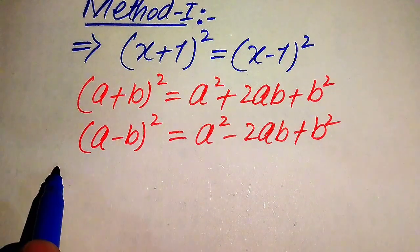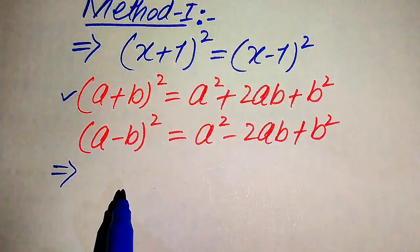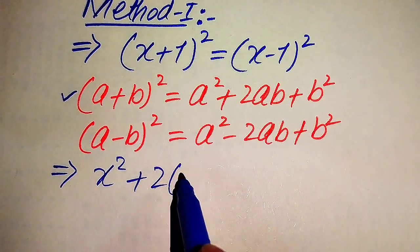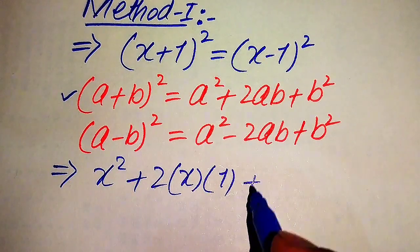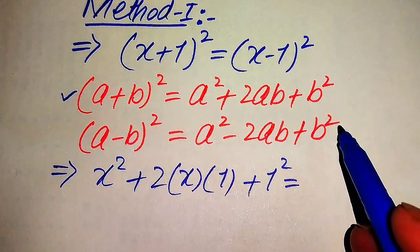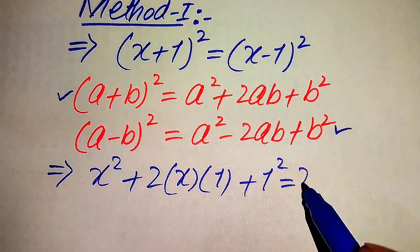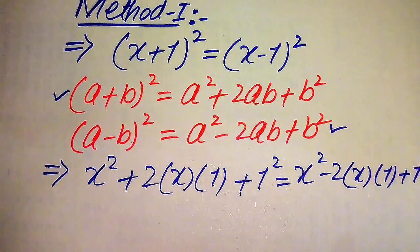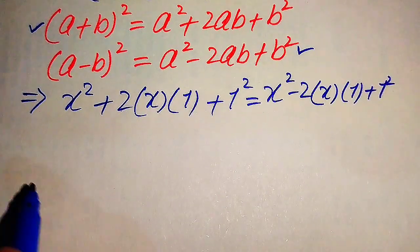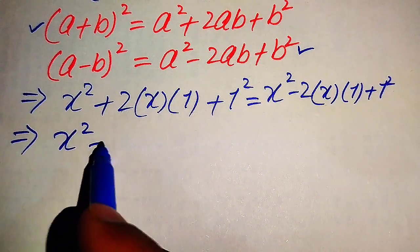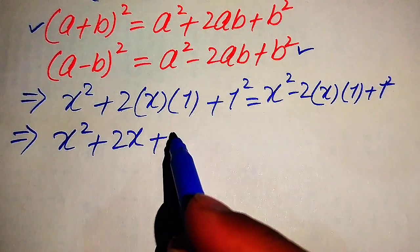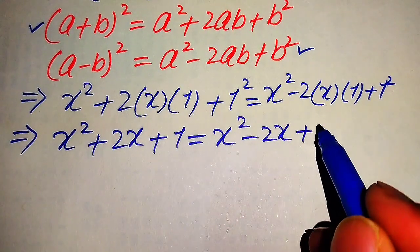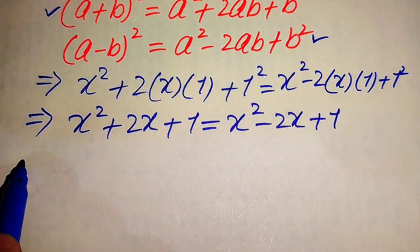After applying the first formula, the left-hand side is written as x² + 2·x·1 + 1² and the right-hand side becomes x² − 2·x·1 + 1². After simplification, the left-hand side is x² + 2x + 1, and the right-hand side is x² − 2x + 1.